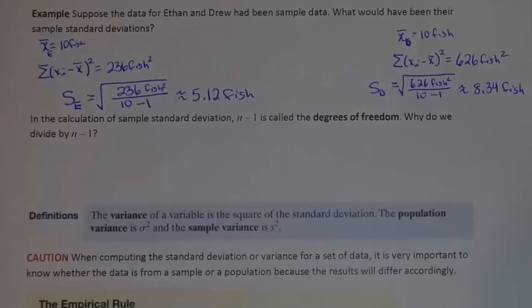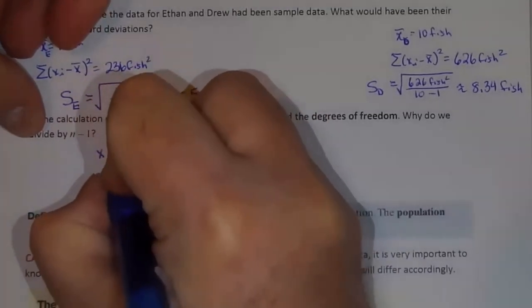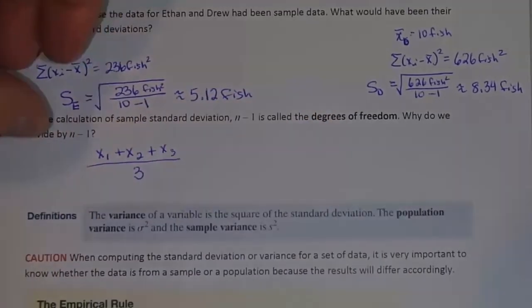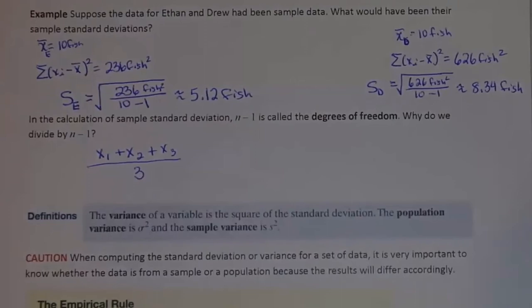Now, what in the world is degrees of freedom? I don't want to confuse you too much, so I'm going to give you an idea about what degrees of freedom are. Suppose in this class the only grades you got were three tests. Then if I were going to calculate your grade, I would just take your three test scores, add them up, and divide by three, giving me your grade in the class. In other words, I would take your first test score plus your second test score plus your third test score, divide by three, and that would give me your overall average.